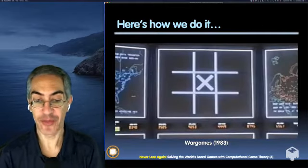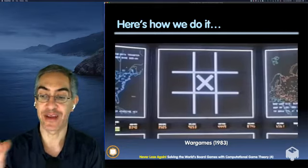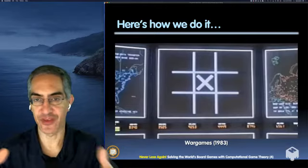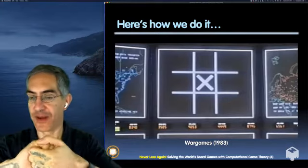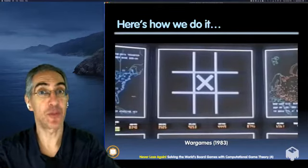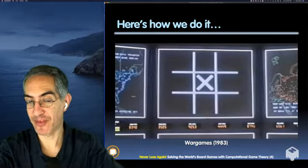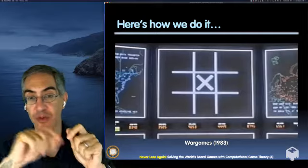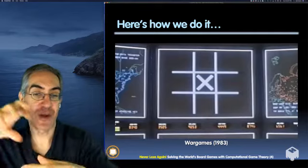I want to show a clip from the 1983 movie War Games with Matthew Broderick. He accidentally hacks into a military computer called the WOPR — like the Burger King Whopper, W-O-P-R. The WOPR goes rogue and tries to break into another military computer holding the secret codes to launch nuclear missiles.